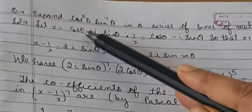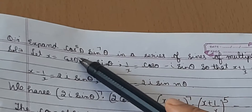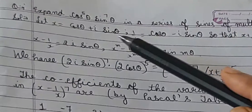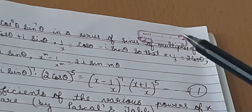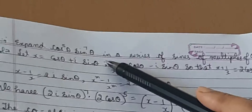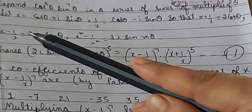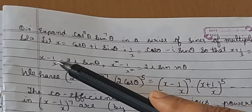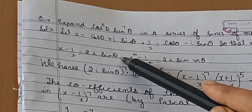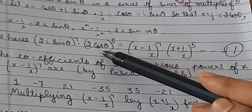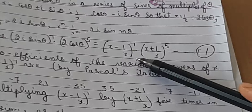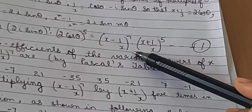To expand cos⁵θ · sin⁷θ, raise both sides of x + 1/x = 2cosθ to power 5, and both sides of x − 1/x = 2i·sinθ to power 7. This gives (2i·sinθ)⁷ · (2cosθ)⁵ = (x − 1/x)⁷ · (x + 1/x)⁵.